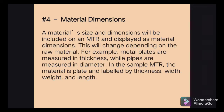The fourth one is the material dimension. A material's size and dimensions will be included on an MTR and displayed as material dimensions. This will change depending on the raw material — for example, metal plates are measured in thickness while pipes are measured in diameters. In the sample MTR, the material is plate, labeled by thickness, width, weight, and length.